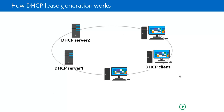The first step in the DORA process is Discover — the client discovers the DHCP server. The DHCP client currently has no IP address, so it sends a DHCP Discover packet over the network as a broadcast, because it does not know where the DHCP server is located. This broadcast is received by all computers on the network, but the other computers will discard that packet since it is a DHCP Discover packet.